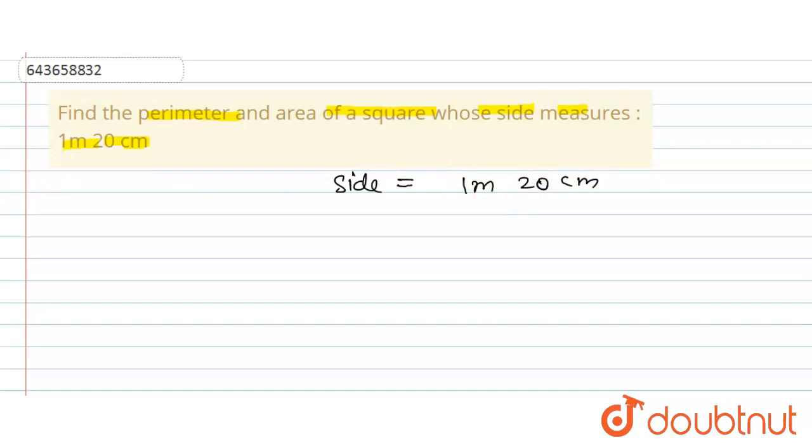For easy calculation, we will change this meter into centimeter. So one meter is equal to 100 centimeters. Okay, so this can be written as, that means side will be equal to